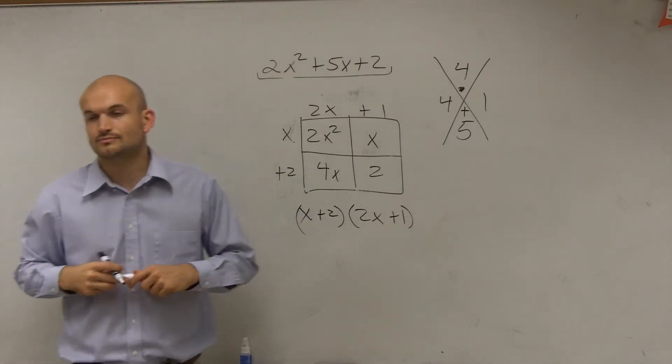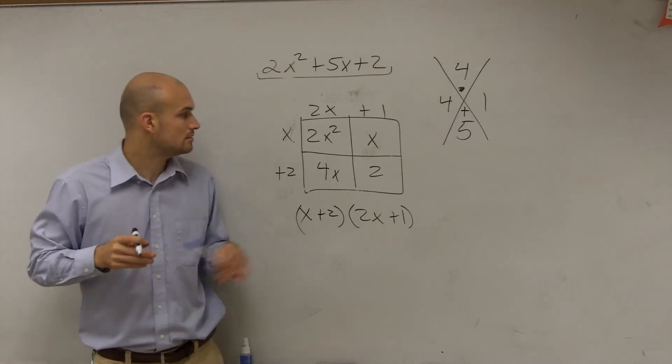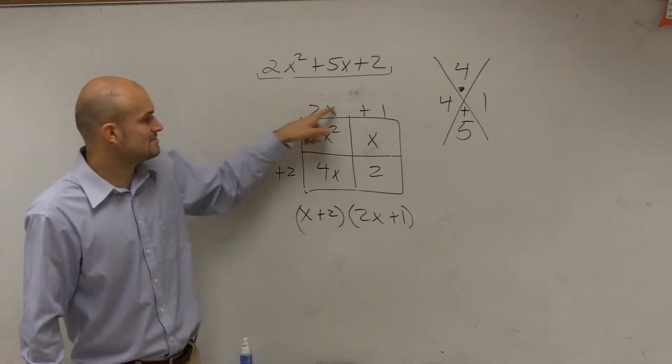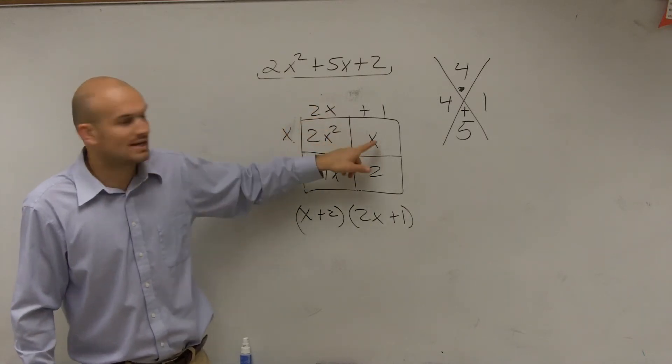Plus 1 and plus 2 on the side. So x goes into 2x² 2x times, because x times 2x equals 2x². x times what gives you x? 1, right?